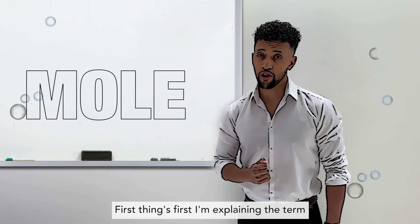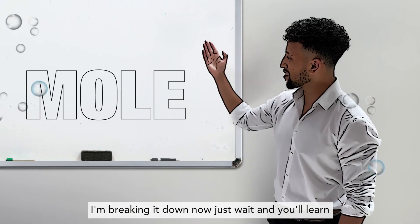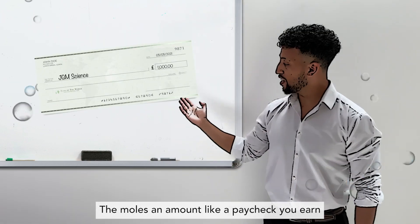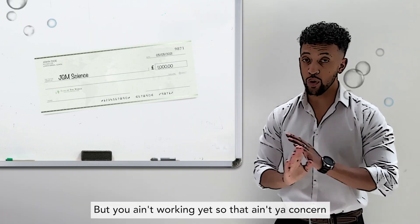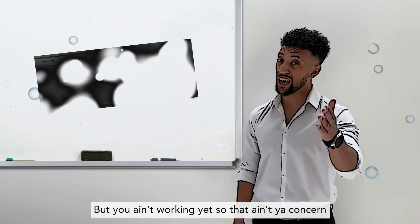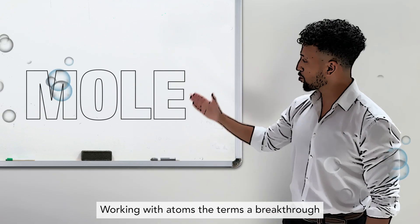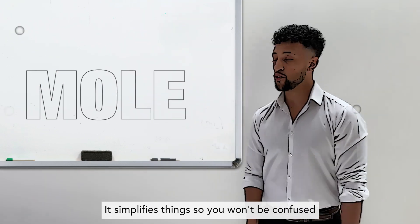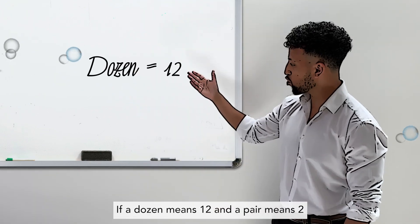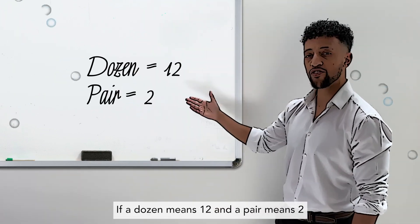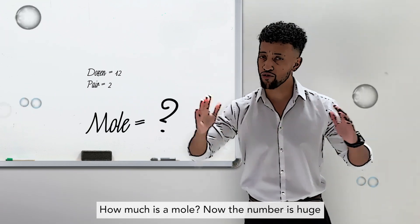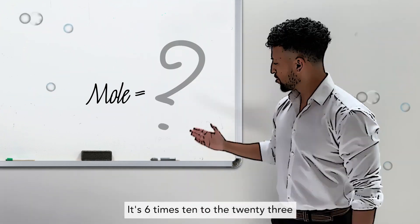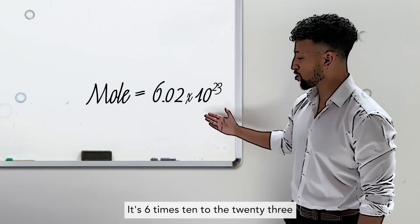First things first, I'm explaining the term, I'm breaking it down. The mole's an amount like a paycheck you earn. Working with atoms, the term's a breakthrough — it simplifies things so you won't be confused. If a dozen means twelve, and a pair means two, how much is a mole?